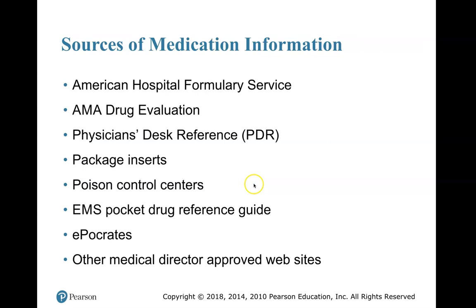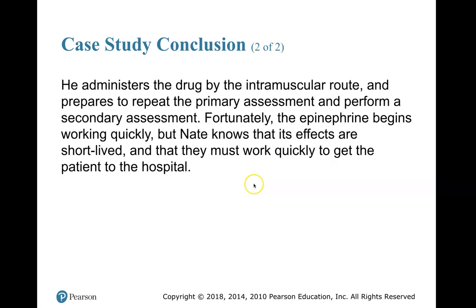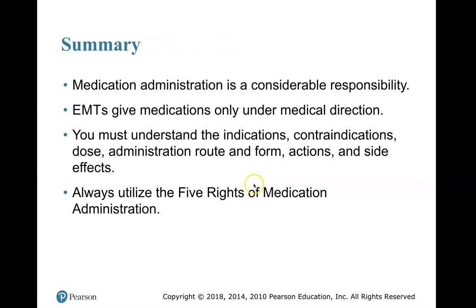Sources for medication information include: American Hospital Formulary Service, AMA Drug Evaluation, Physician's Desk Reference, package inserts, poison control centers, EMS pocket drug reference guide, Epocrates online, and other medical director-approved websites. Back to the case study: as Nate's partner assists with ventilation, Nate reviews the anaphylaxis protocol, confirms the epinephrine pen belongs to the patient, checks the name, dosage, and expiration date, and administers it by intramuscular route. The epinephrine begins working quickly, but Nate knows its effects are short-lived and they must get the patient to the hospital rapidly.